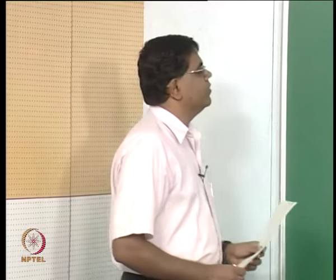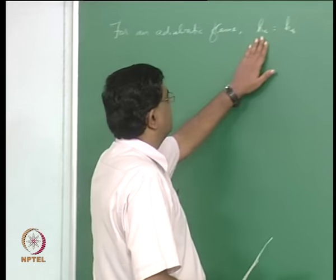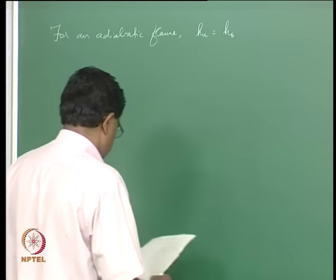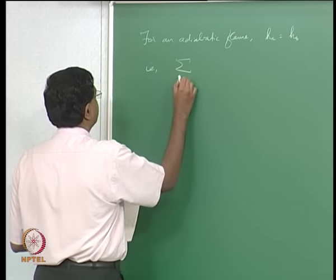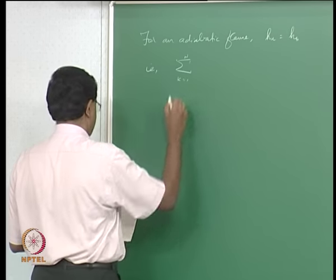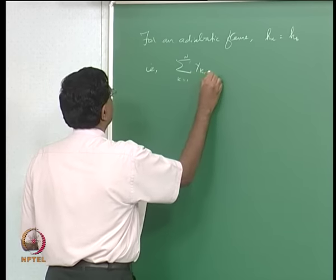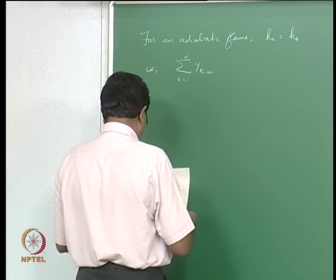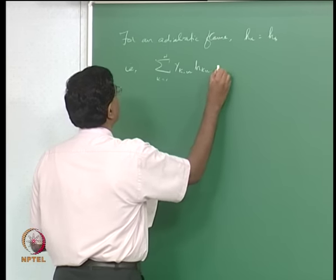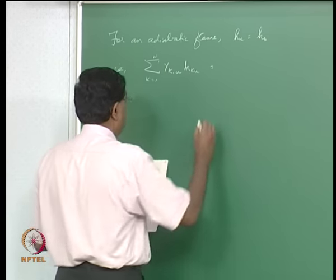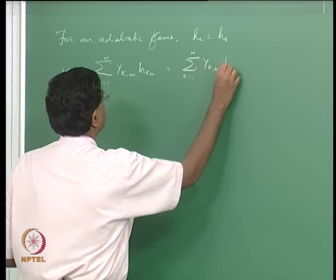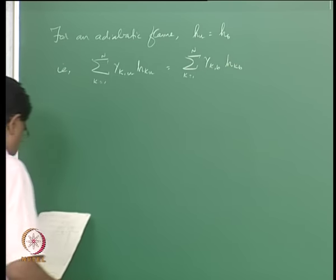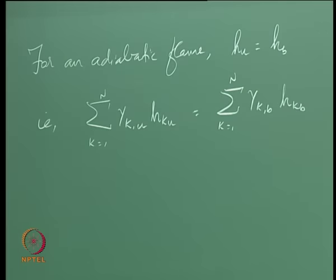For an adiabatic flame, the unburnt enthalpy should be equal to the burnt enthalpy, which means sigma k equals 1 to n of y_k,u times h_ku equals sigma k equals 1 to n of y_kb times h_kb, where h_kb is the enthalpy of the burnt products and y_kb is something we have seen so far.